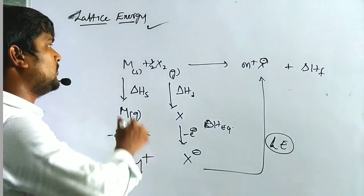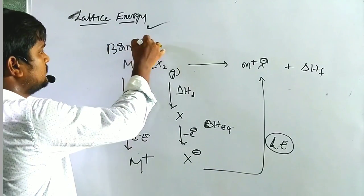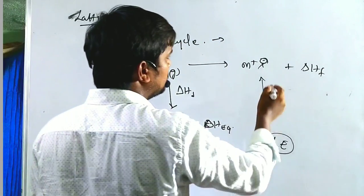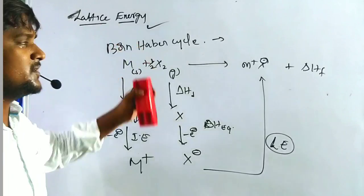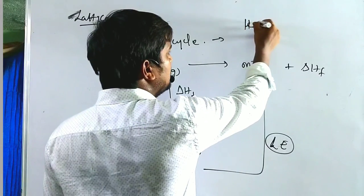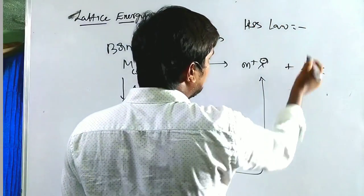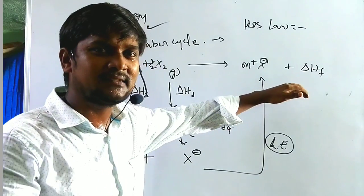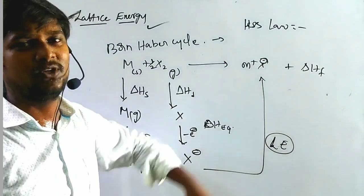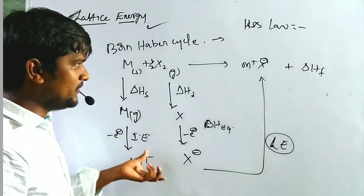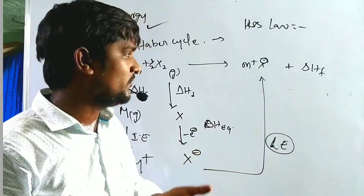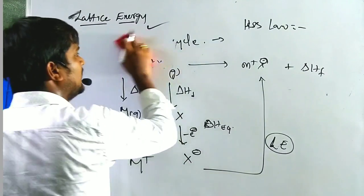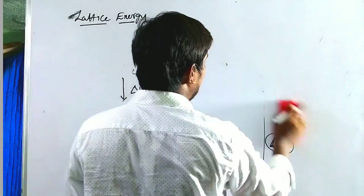The Born-Haber cycle is based on Hess's law. According to Hess's law, the heat of formation is the same whether the reaction occurs in one step or multiple steps — both are equal. With the help of the Born-Haber cycle, we can calculate the lattice energy of transition metal elements.